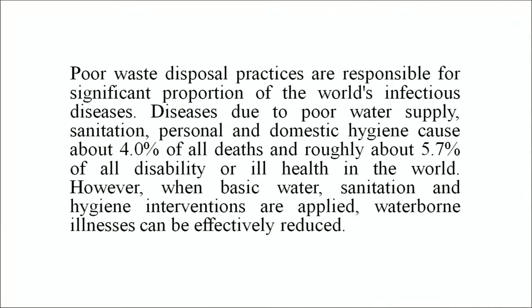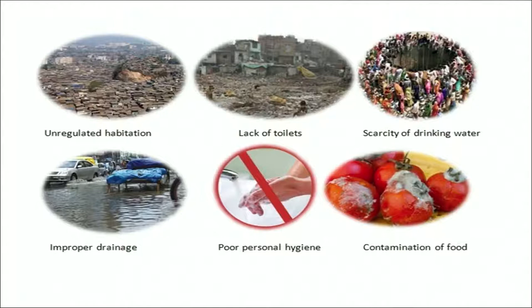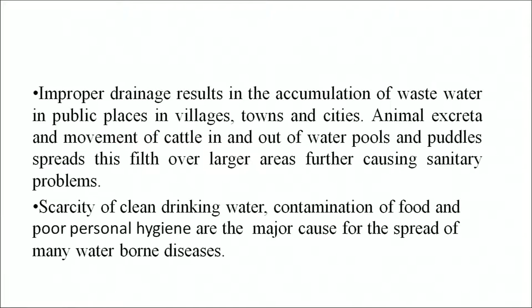Diseases due to poor water supply, sanitation, personal and domestic hygiene cause roughly 5.7% of all disability or ill health. When basic water, sanitation and hygiene interventions are applied, waterborne illnesses can be effectively reduced. Unregulated growth of habitation, lack of proper toilets especially in villages, towns and slum areas of cities, does not permit proper disposal of human waste, leading to improper sanitary conditions and health hazards. Improper drainage results in the accumulation of wastewater in public places. Animal excreta and movement of cattle in and out of water pools spreads filth over larger areas, further causing sanitary problems.